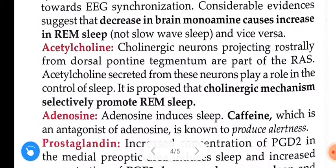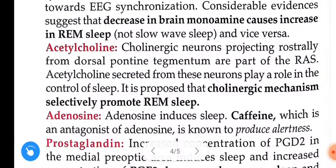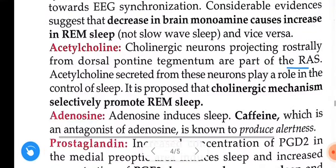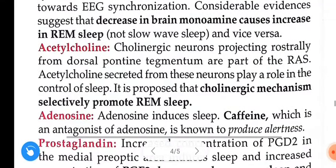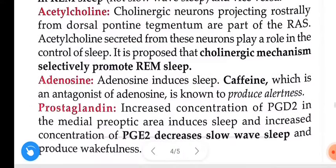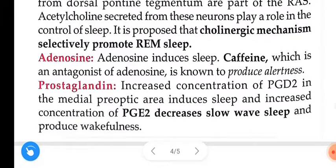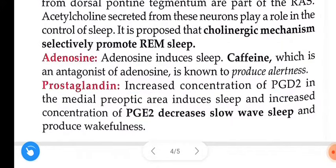Acetylcholine: cholinergic neurons projecting from the dorsal pontine tegmentum are part of REM sleep circuitry. Acetylcholine secreted from these neurons plays a role in the control of sleep, and it is proposed that cholinergic mechanisms selectively promote REM sleep. Adenosine induces sleep; caffeine, which is an antagonist of adenosine, is known to produce alertness. Prostaglandins: increased concentration of PGD2 in the medial pre-optic area induces sleep, while increased concentration of PGE2 decreases slow wave sleep and produces wakefulness.